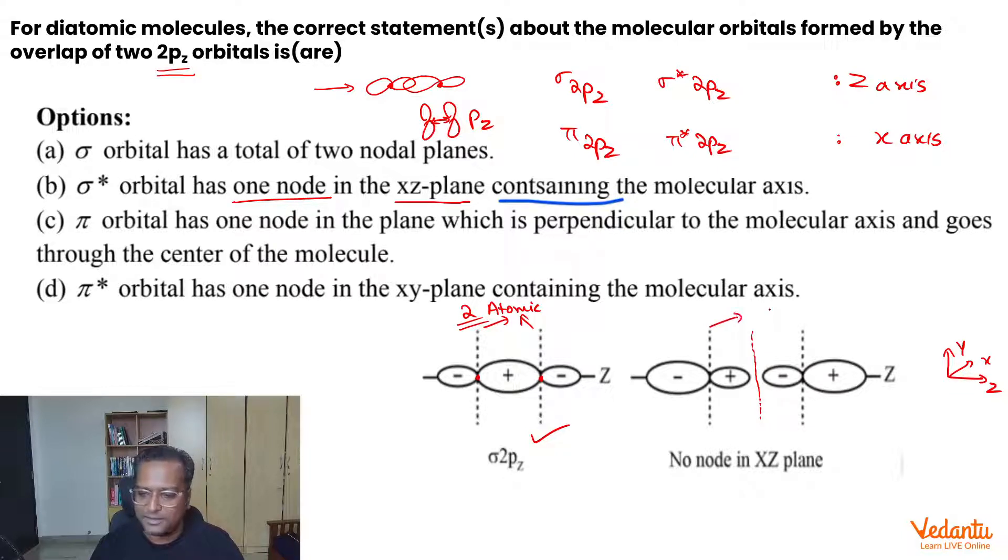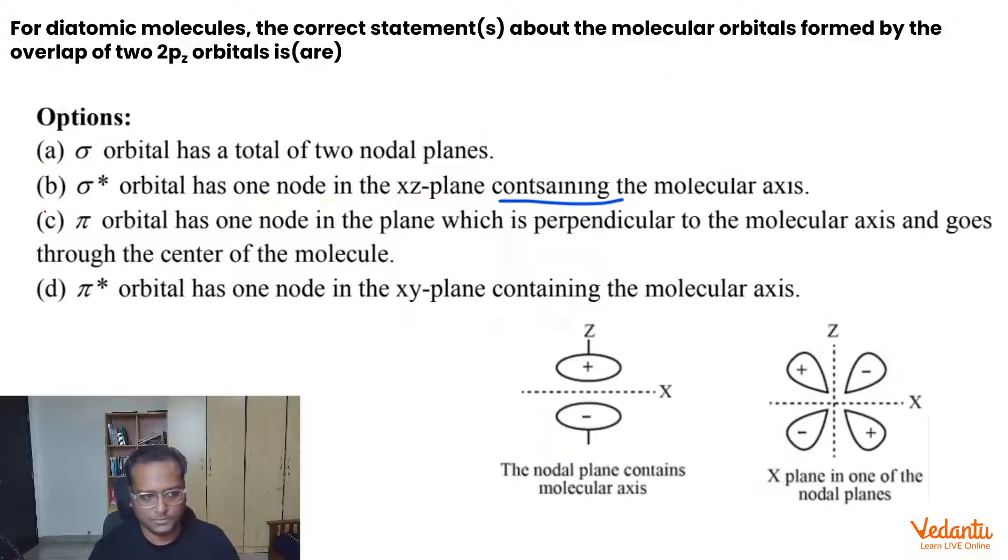We do get these 3 nodal planes, out of which 2 are atomic nodal planes. They are present in your x-y plane. This is your molecular nodal plane, again present in the x-y plane. So A was correct and B is definitely incorrect.